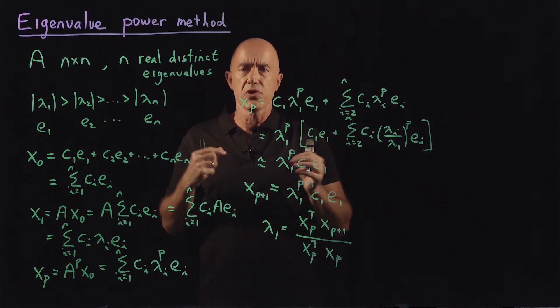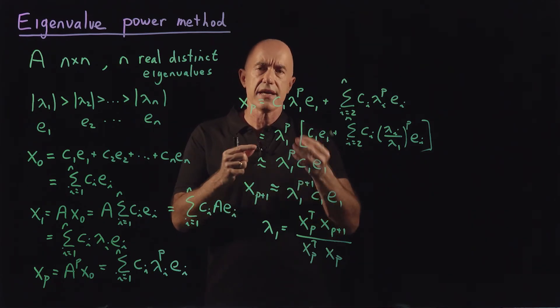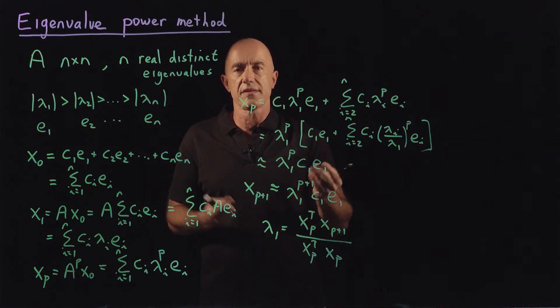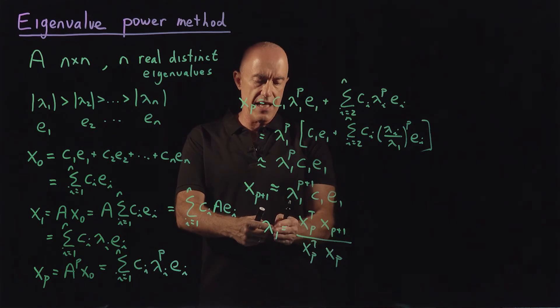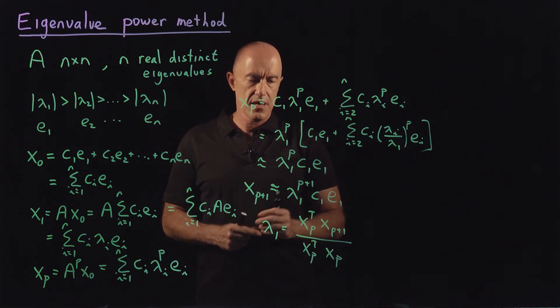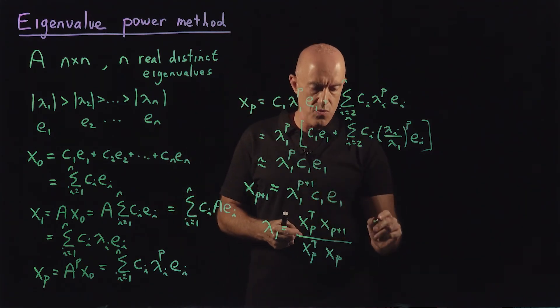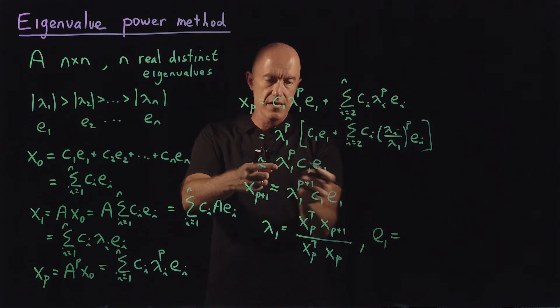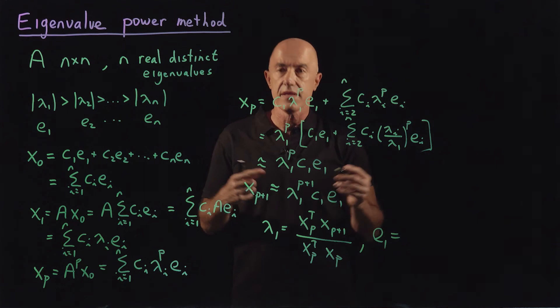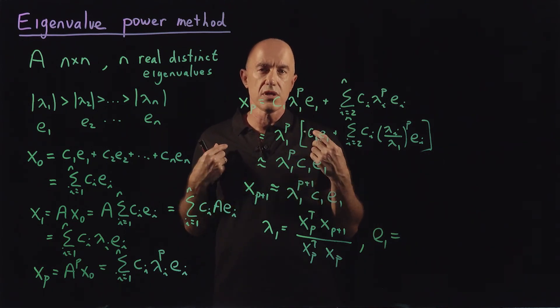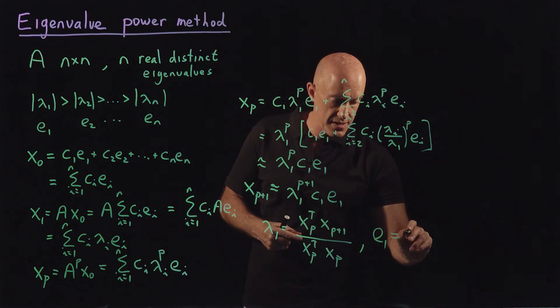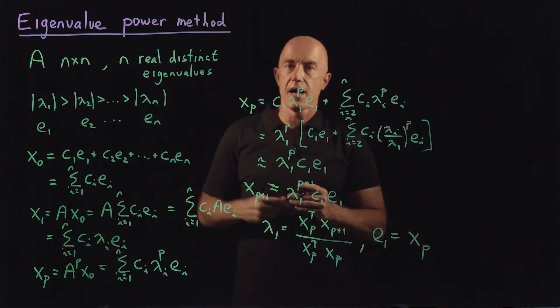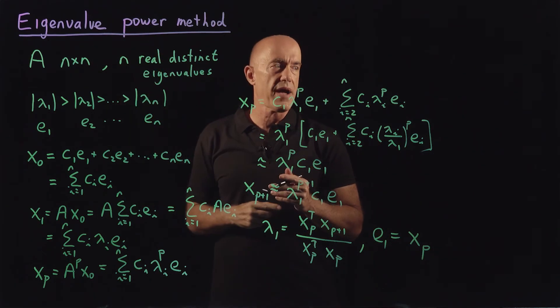So by repeated multiplication by a, the right hand side, this expansion here will be dominated by the term containing the dominant eigenvalue. And then we can pick out what that lambda one is. e one is quite simple. So e one here can be just taken equal to x p because this is just a constant times e one. So the eigenvector is only unique up to multiplication by a constant. So this is essentially x p. That's essentially what is the eigenvalue power method.